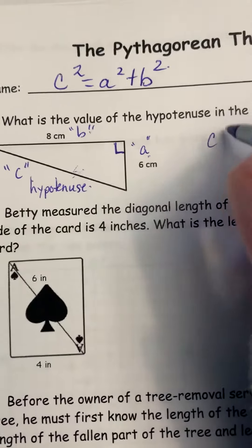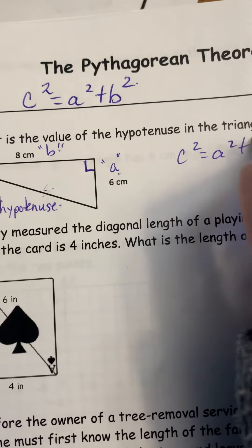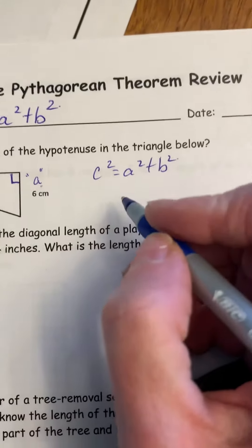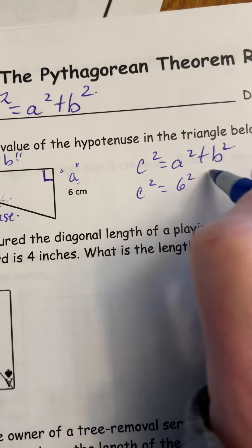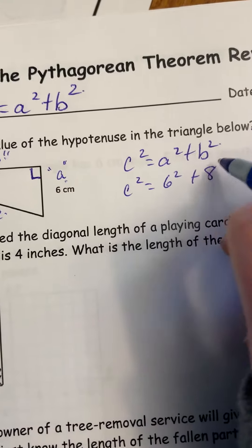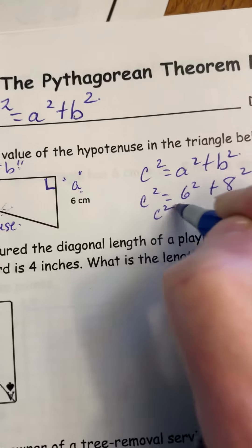So how would we find this? Well, we always set up the formula and then we substitute in for what we know. So the unknown right now is C. The A I wrote down as 6, B I wrote down as 8, so we're going to work that out.